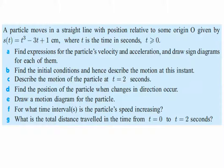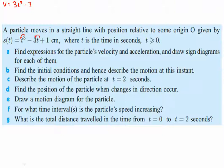Let's do an application. A particle moves in a straight line with position relative to some origin O given by a function. We need to find expressions for the particle's velocity and acceleration and draw sign diagrams for each. Velocity is the first derivative: bring the three in front, making it 3t squared, then minus three, because the derivative of the linear term gives a constant. So velocity is 3t² − 3.